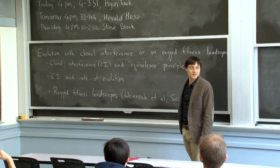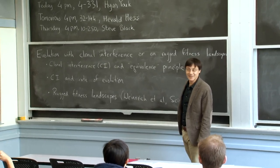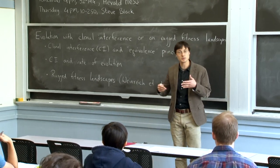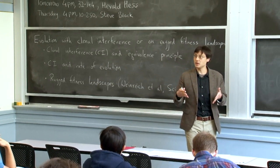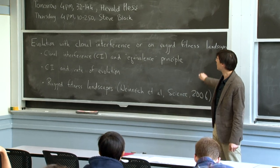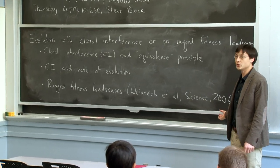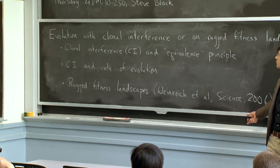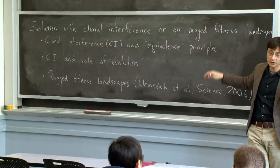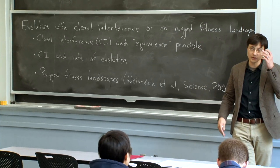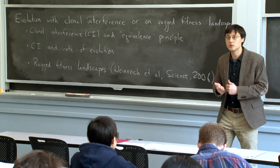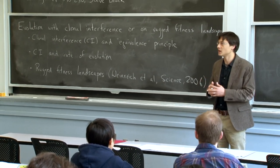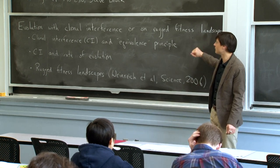Today we want to talk about evolution. In particular, we're going to complete our discussion of evolution in the presence of clonal interference, when multiple mutant lineages are competing in the population at the same time. Then we'll move on to think about evolution on so-called rugged fitness landscapes. Such ruggedness occurs when there are interactions between mutations within the organism — the so-called epistatic interactions — which can constrain the path of evolution.